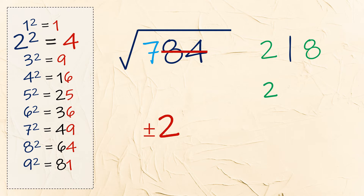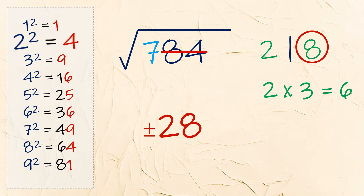Third, to identify which between 2 and 8 will be used as the last digit, we'll multiply 2 by the next number which is 3. We get 6. If 7 is greater than the product 6, then we'll use the greater one. So the answer is positive or negative 28. If in case 7 is less than the product, then we'll use the lesser number. It has positive and negative because when you multiply positive 28 by itself you get 784, and negative 28 by itself also gives 784.